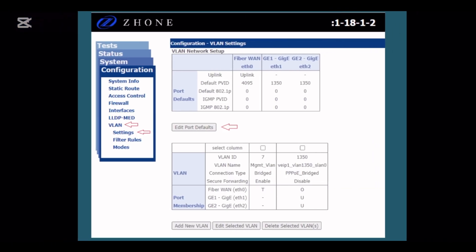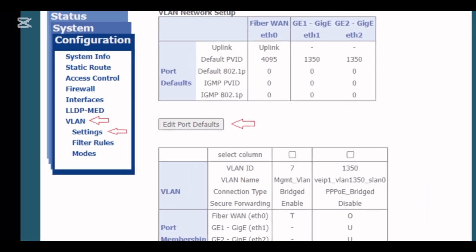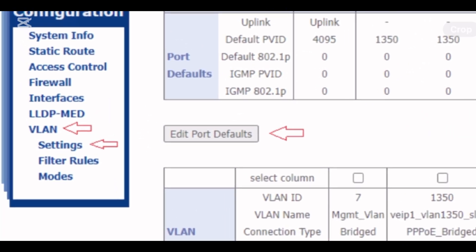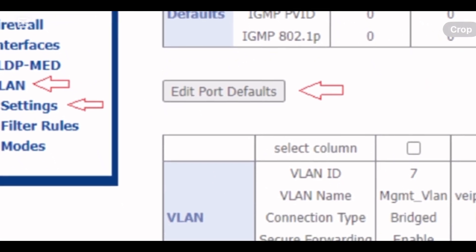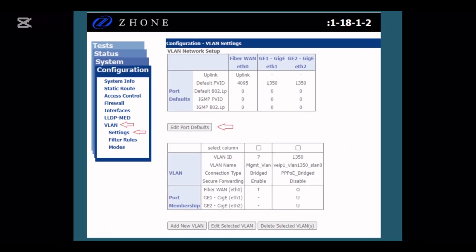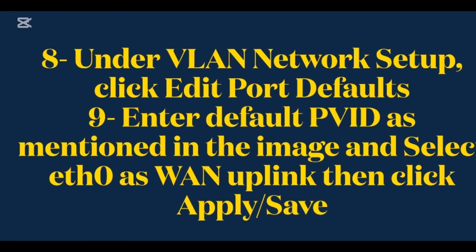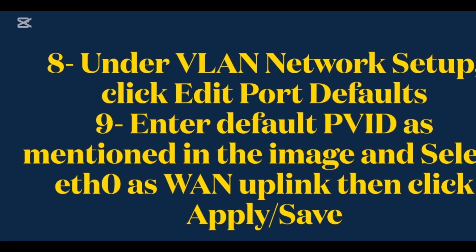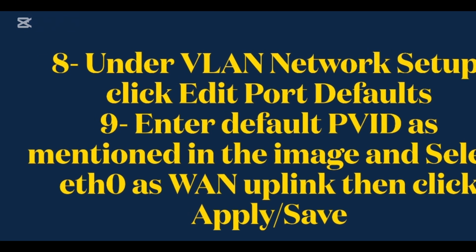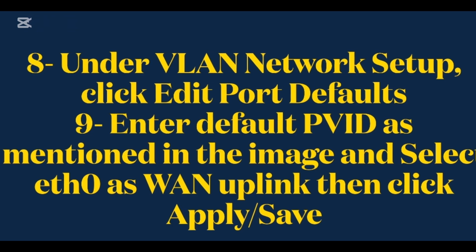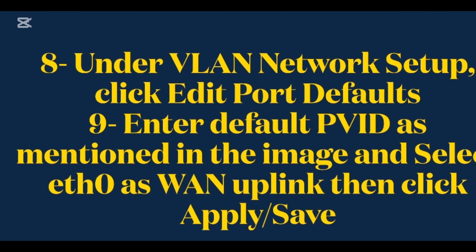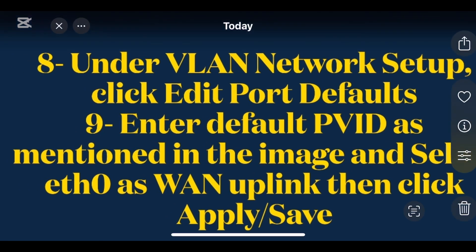Under VLAN, click Settings. Under VLAN network setup, click Edit Port Defaults. Enter the Default PVID as mentioned in the image and select ETH at 0 as 1 uplink, then click Apply and Save.